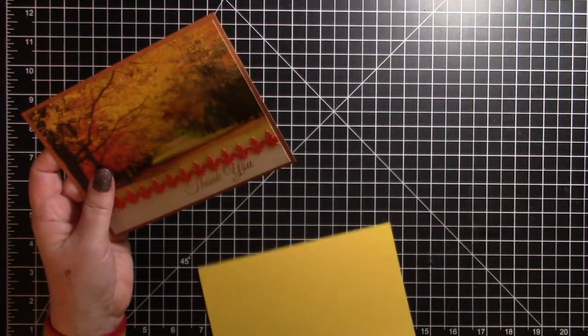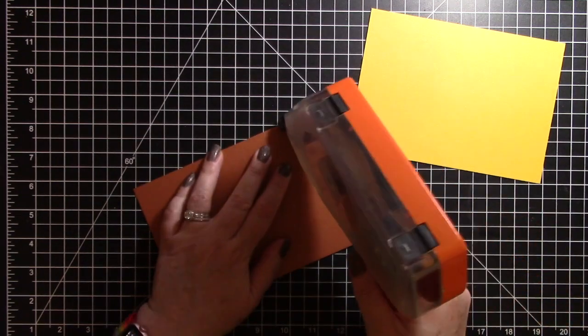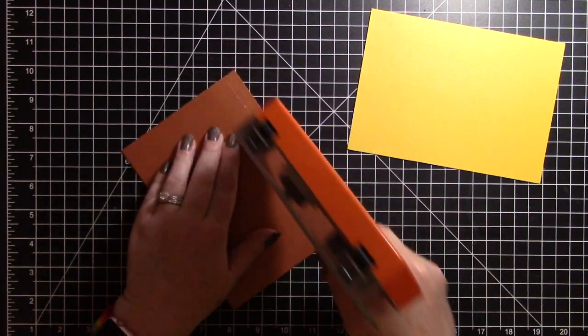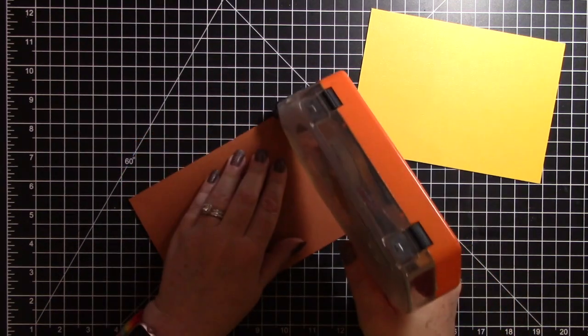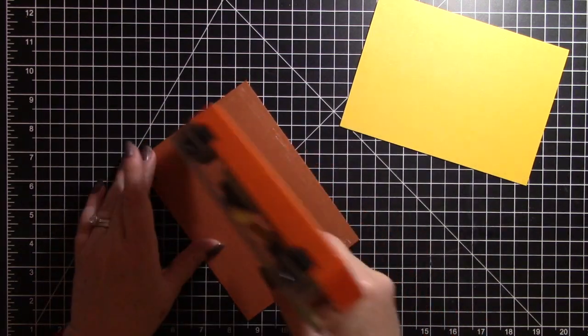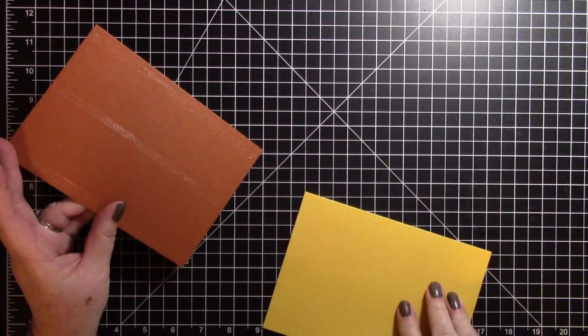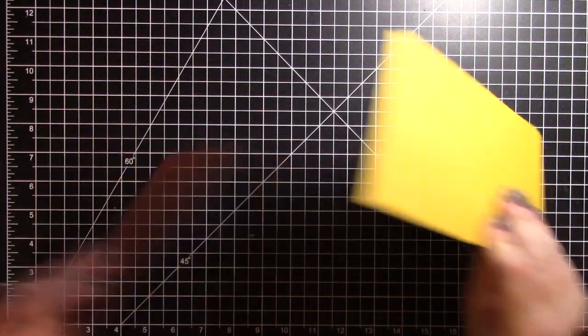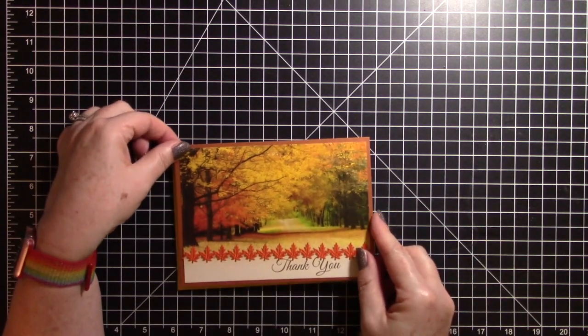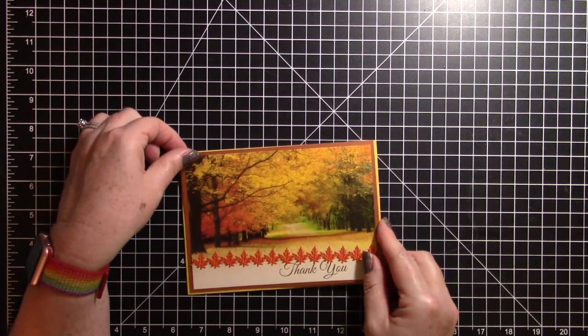There we go. Super easy, super simple but yet so pretty. A lot of the times when we recycle cards, the card itself is so pretty and you don't have to do a whole lot to it. Let the paper do the work as they say. In this case I'm letting the card do the work and I'm just adding just a little bit of extra oomph to it.